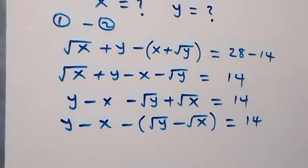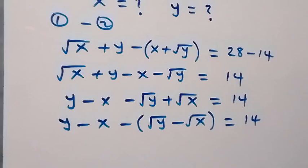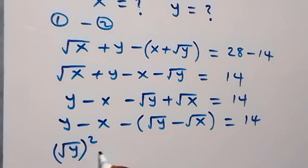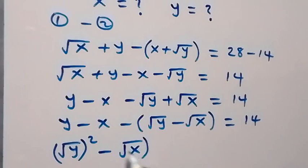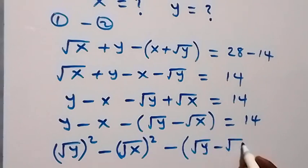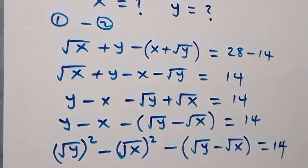Now, from here we can also write y as (√y)². Because square can cancel square root and we see a y. So also x can be written as (√x)², then minus into bracket. We have (√y)² minus (√x)², close bracket, then equals to 14 on this side.